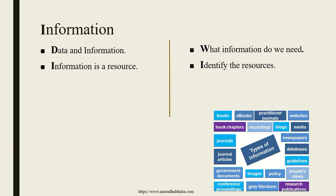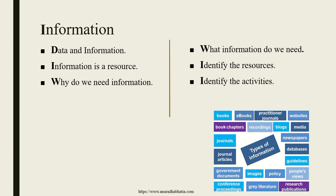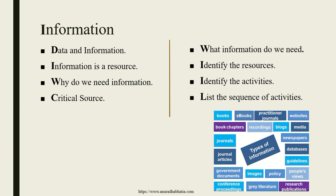These are the different types of resources available from where we can extract our information. We need information to identify activities and work on that particular information. Once we know what information is needed and have extracted it from those resources, we identify the activities we need to do. A critical source is the sequence of activities and any additional input needed beyond the basic resources from which information should be extracted and worked on.